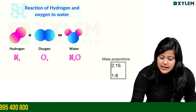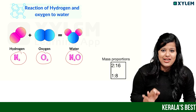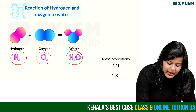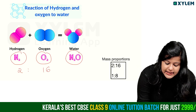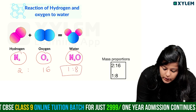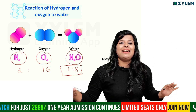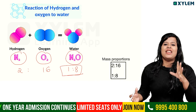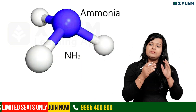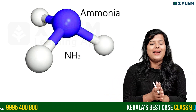The mass proportion is constant. For water, H2O, the mass proportion is 2 to 16, which simplifies to 1 to 8. So the proportion of hydrogen to oxygen in water is always 1 to 8.